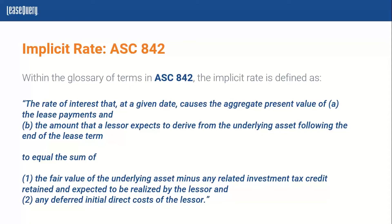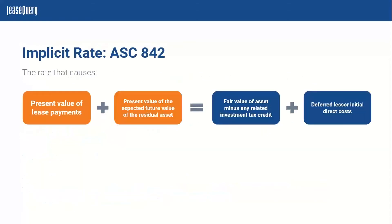Now this definition, to simplify it, we've actually created a formula in the next slide to help you with this. The formula is virtually identical to that definition. Taking a step back, this implicit rate that causes all of this to equal each other is really just the rate that the lessor is charging the lessee. As mentioned, it's not normally specified in the lease and it has to be inferred based on this information, which is often not readily available to the lessee.